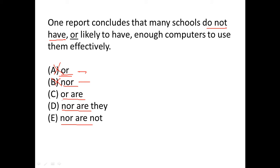Now in C we have OR ARE, and it says NOR ARE THEY. Now there are two ways in which we can handle this. In C, ARE does not have a subject, like in D we have THEY which is the subject for ARE. That's one thing.